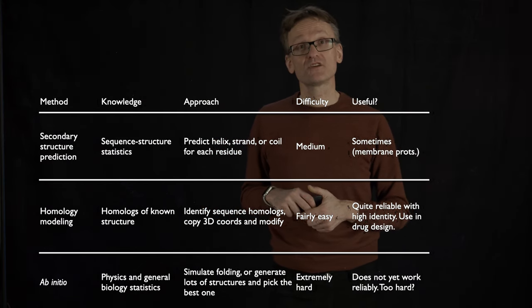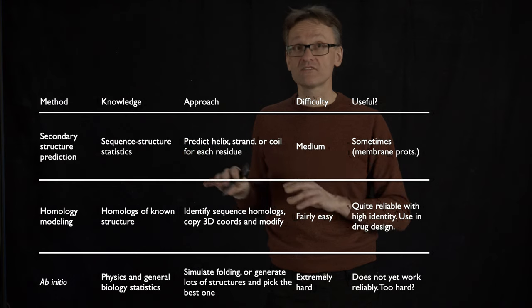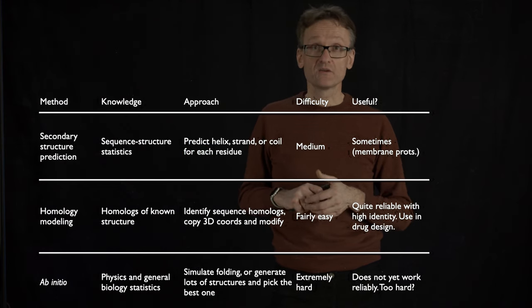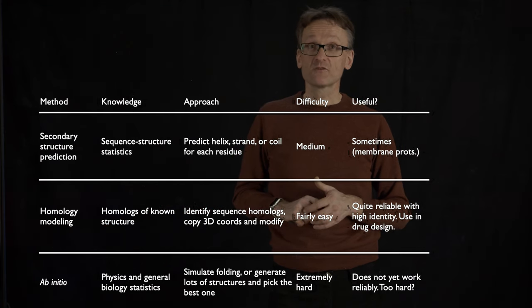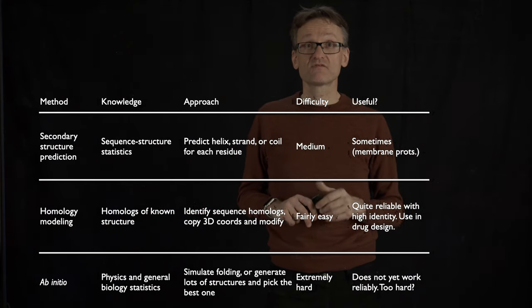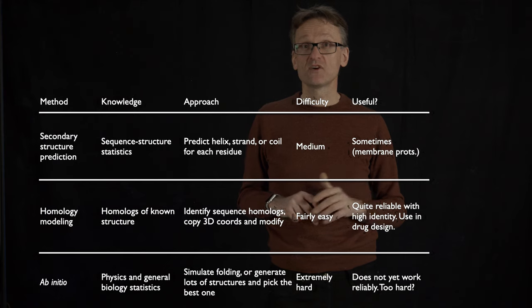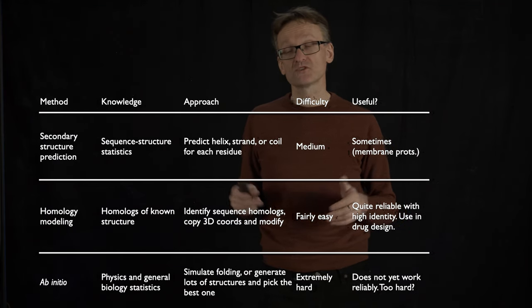And at the time, I argued that secondary structure prediction was of medium difficulty, but we could probably get some 80% certainty or so. Homology modeling, that I'm going to come back to in a second, that was fairly easy, but maybe, maybe not. And ab initio, that was impossible.